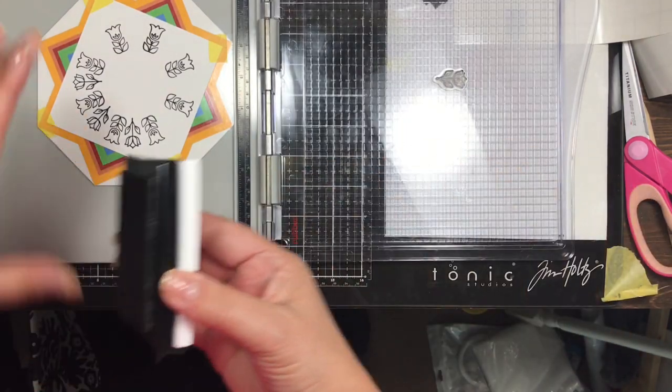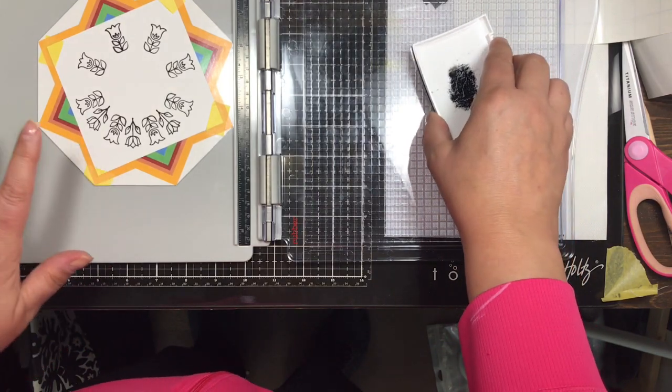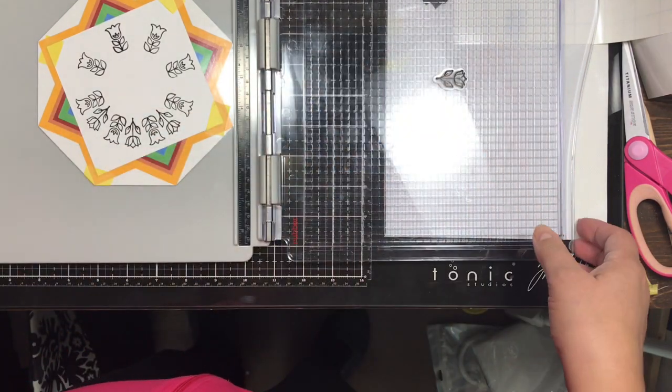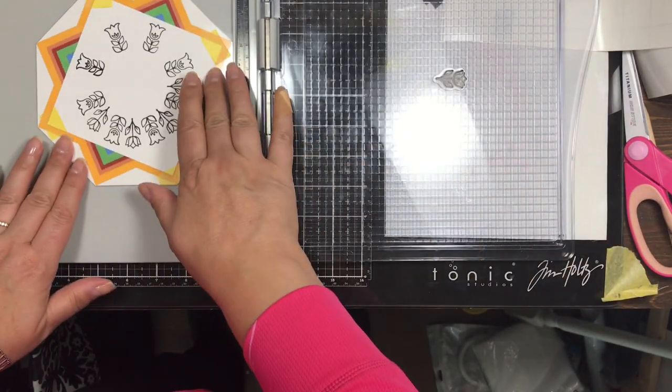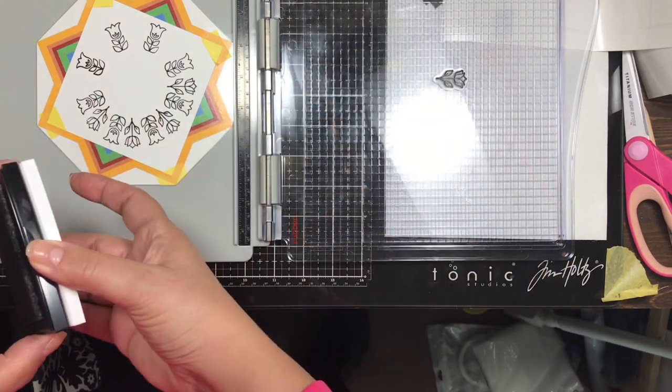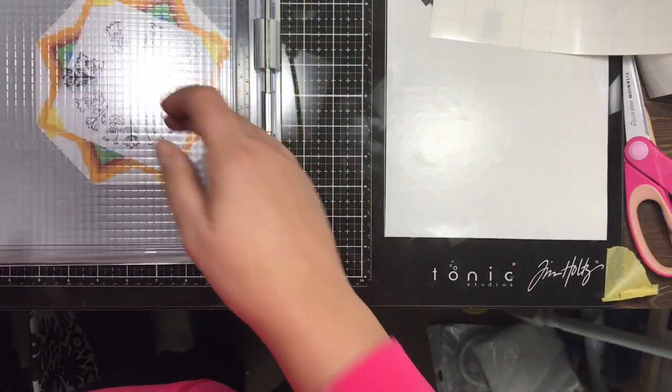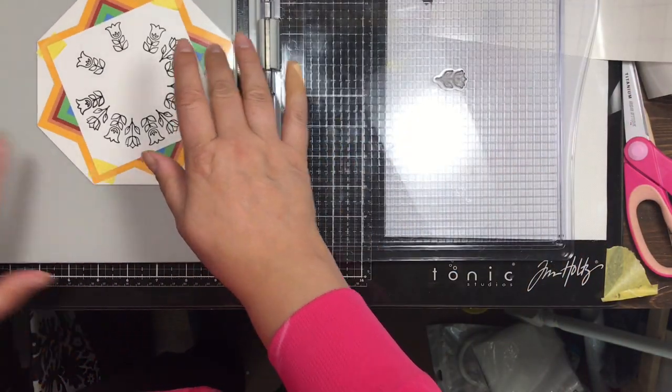So here I am just stamping other flowers within that circle, and then next I will actually stamp some really miniature, really small miniature hearts right below that.